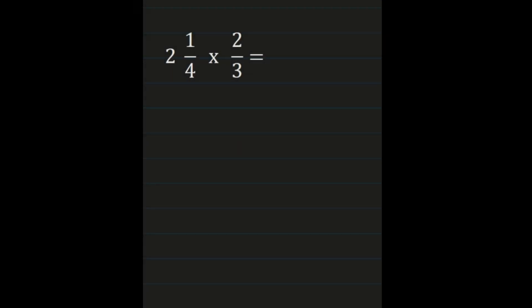Now let's look at multiplying a mixed number times a fraction. We still need to multiply numerator times numerator and denominator times denominator, so we convert the mixed number to an improper fraction. For 2 and 1/4: 4 times 2 is 8, plus the numerator 1 gives us 9. So we have 9 fourths times 2 thirds — now a fraction times a fraction.